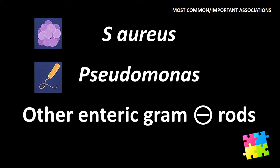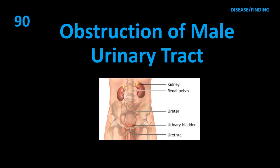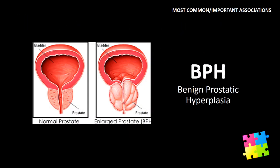Item 90: Obstruction of male urinary tract — BPH (benign prostatic hyperplasia).